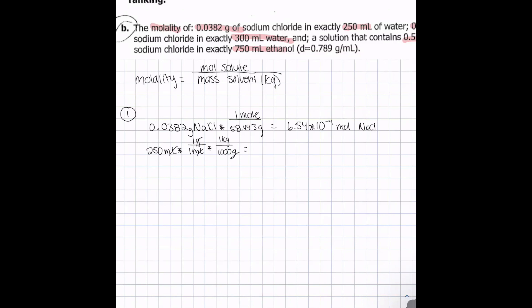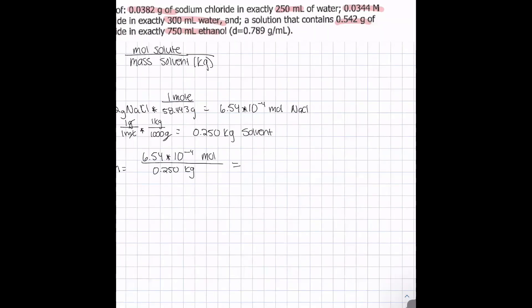That leaves us with 0.250 kilograms of solvent. Plugging it into our molality equation, we get 6.54 times 10 to the negative 4 moles of solute divided by 0.250 kilograms of solvent, which gives us 0.0261 molality.